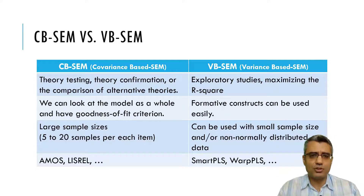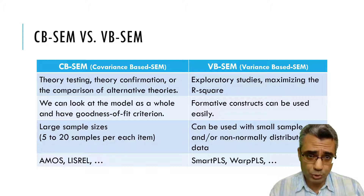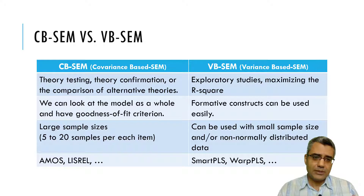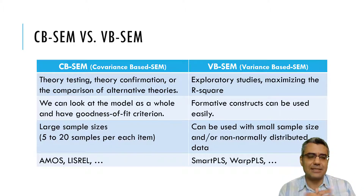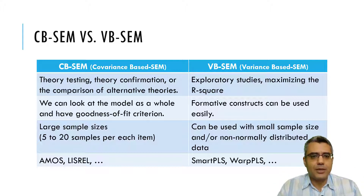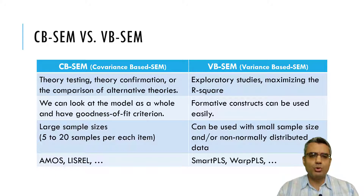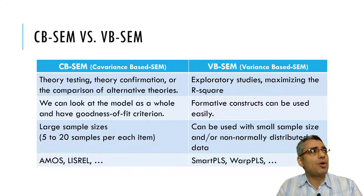Based on a large body of literature, when you want to test a theory, confirm a theory, or compare different theories and models, CBSEM is a very good choice. CBSEM looks at the model as a whole and gives you goodness of fit — some model fit indexes — to test the model as a whole. You can see whether this theory or model is good, and you can use those indexes to compare different models and theories. However, VBSEM or PLSSEM is mostly used for exploratory studies or when you want to maximize the variance explained by the model — in other words, maximizing the R-square of the dependent variables.